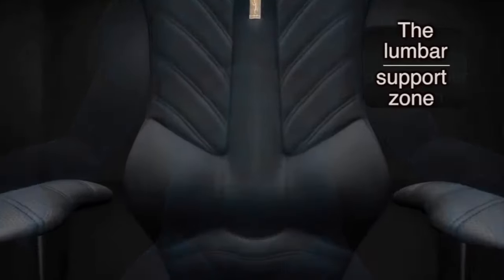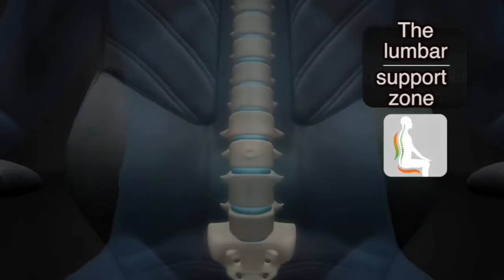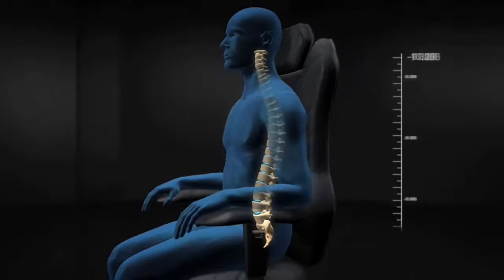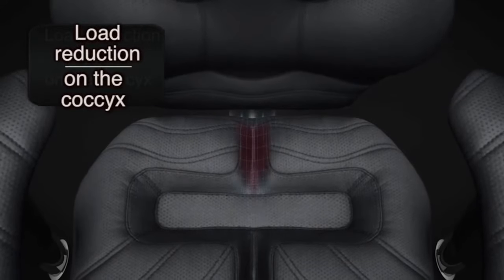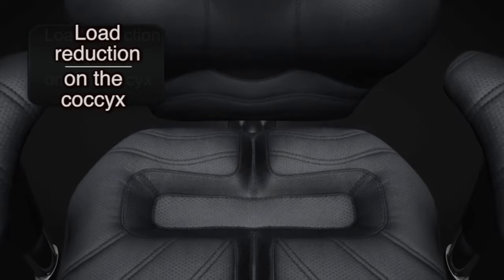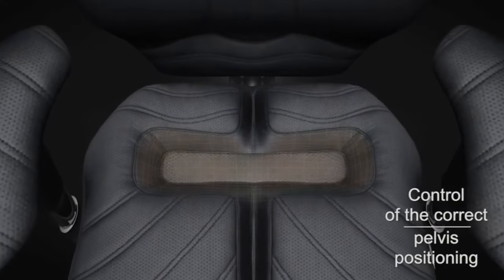Rest guarantees an exclusive zone of load reduction on the coccyx. It is a recess that reduces the pressure of body weight, so you will not feel the strain even with prolonged sitting. The correct pelvis position zone also aims to stabilize your position in the chair.